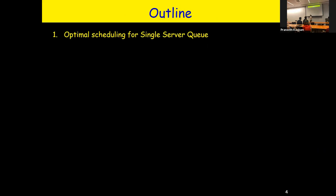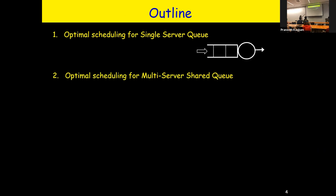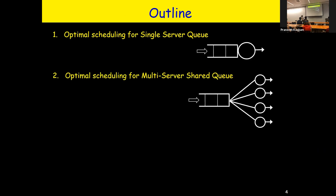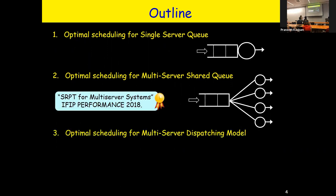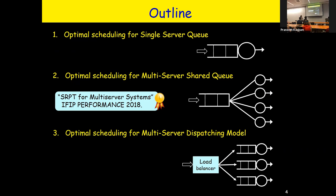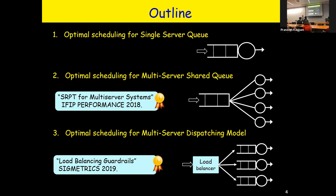Here's the outline. I'm going to start by talking about just a single server queue and what scheduling looks like there, because let's start simple. Then afterwards, we'll move into scheduling for multi-server systems — you'll notice there's one shared queue and a bunch of servers. Then we'll move into scheduling with dispatching systems, which is also a multi-server system, but there's no shared queue; the queues are at the servers with just a front-end load balancer.